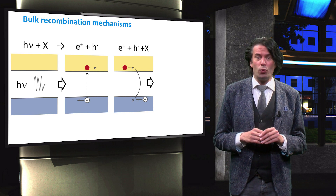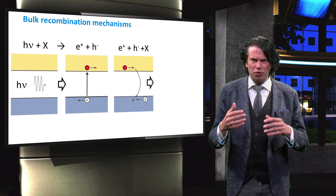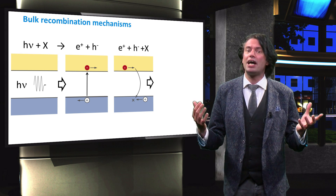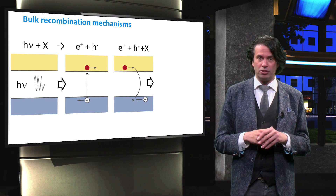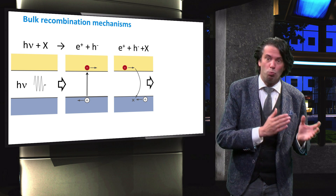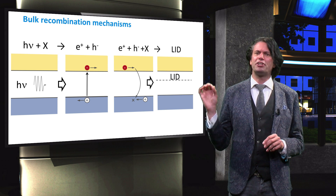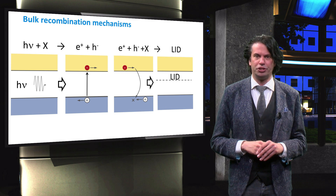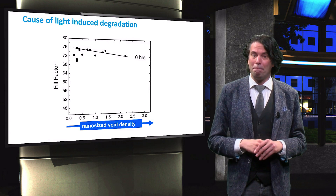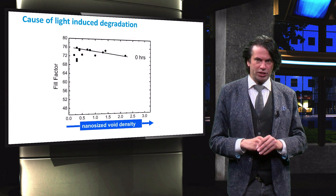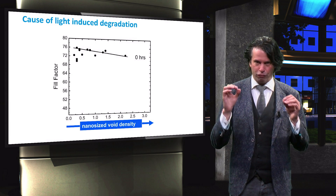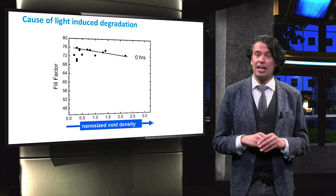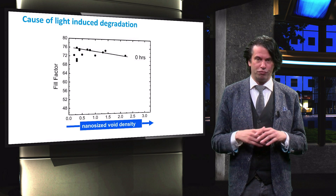Amorphous silicon with a large bandgap, or in other words a material with many nanosite voids, suffers more from light induced degradation than denser amorphous silicon material, having consequently a smaller bandgap. This is demonstrated with the following experiment done at the Delft University of Technology. We have deposited many PIN solar cells with amorphous absorber layers having different void densities. Then we measured the degradation and the thermo-annealing behavior under light soaking of these cells.